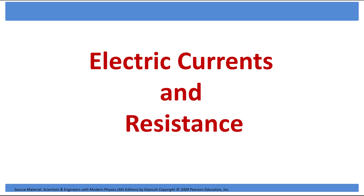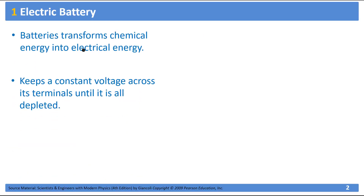But before talking about any of that, I want to discuss batteries a little bit, as they will be the voltage sources that we are going to use in our circuits. An electric battery is a device that converts chemical energy into electrical energy, and its sole purpose is to provide a constant voltage across its terminals — a constant potential difference between its terminals.